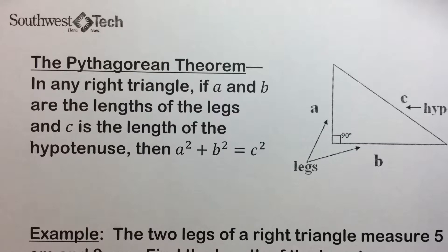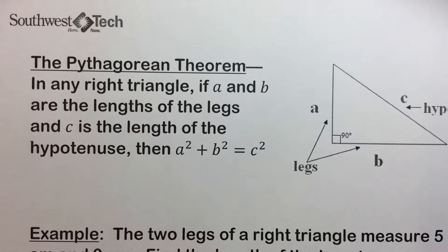Radicals frequently occur in problem-solving situations in which the Pythagorean theorem is used. If we know the lengths of two sides of a right triangle, we can use the Pythagorean theorem to find the length of the third side.